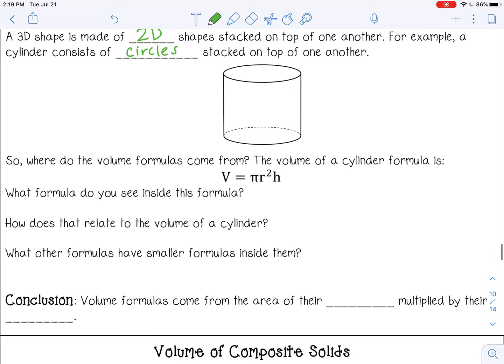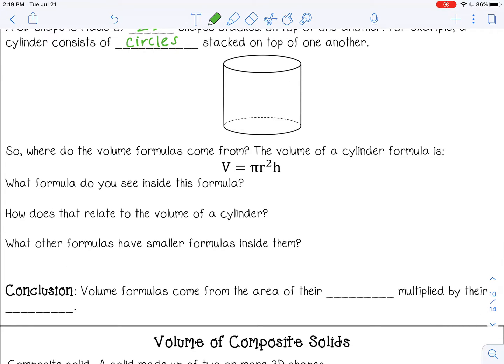So where do the volume formulas come from? Well, if we think about the volume of a cylinder formula, it's pi r squared h. And there's actually a formula inside that formula. So pause the video now and see if you can find that formula. So you should have found the area of a circle formula, which is pi r squared.